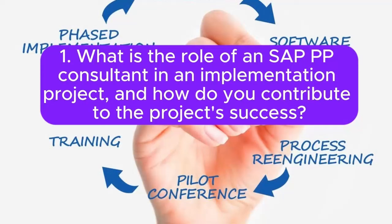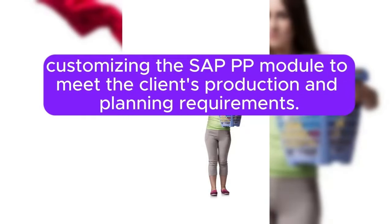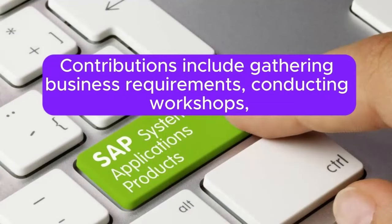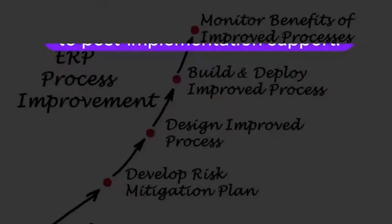Question 1: What is the role of an SAP PP consultant in an implementation project, and how do you contribute to the project's success? In an implementation project, an SAP PP consultant is responsible for configuring and customizing the SAP PP module to meet the client's production and planning requirements. Contributions include gathering business requirements, conducting workshops, designing solutions, and ensuring successful system deployment.